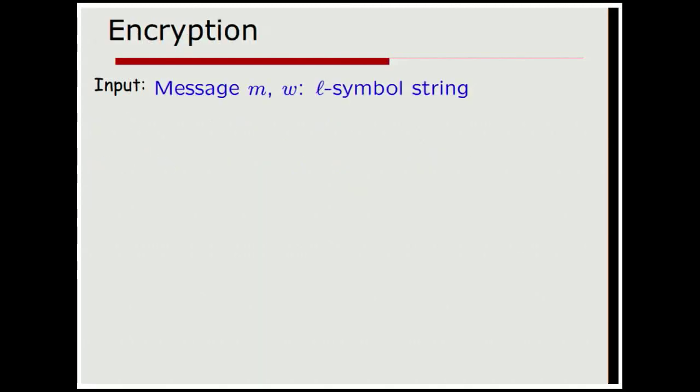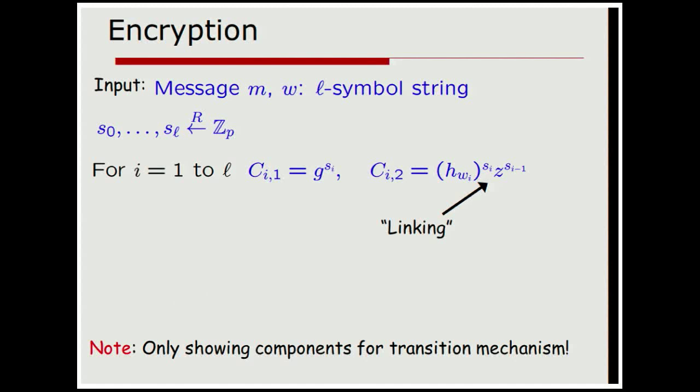Okay, so let's take a look at how part of encryption works. The input is going to be a message small m along with an L symbol string W. I'm going to choose these random exponents, S0 through S sub L. And now the part I want to show here is that for I is equal to 1 to L, we give away G to the S I and also H sub W I associated with the I symbol to the S I and Z to the I minus 1. And, sorry, Z to the S sub I minus 1. So what this, kind of the point here is that I am somehow embedding the string W in the ciphertext itself. That's the point I want to do here. So I'm getting all these symbols in here and this linking is going to preserve the order. Like I don't want some attacker to be able to essentially switch the order, you know, permute the order of the string in any way. Note, I'm only showing components for the transition mechanism so if you're wondering like, oh, where's the message play in, this is why. I'm just showing you a little, a particular piece of it.